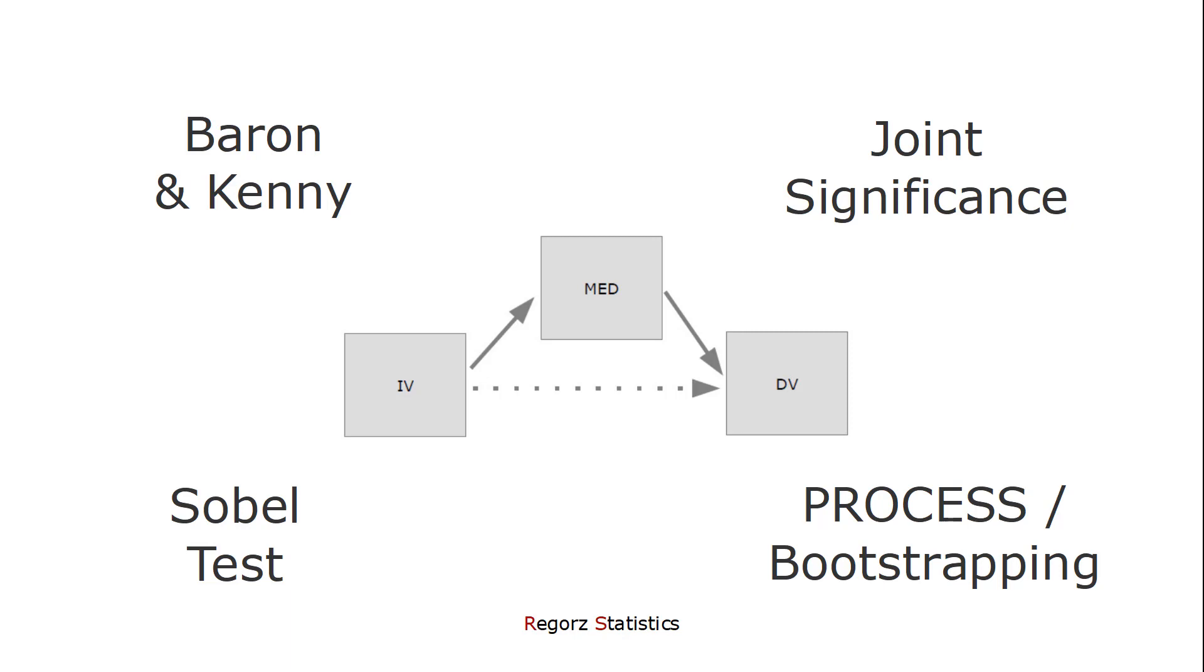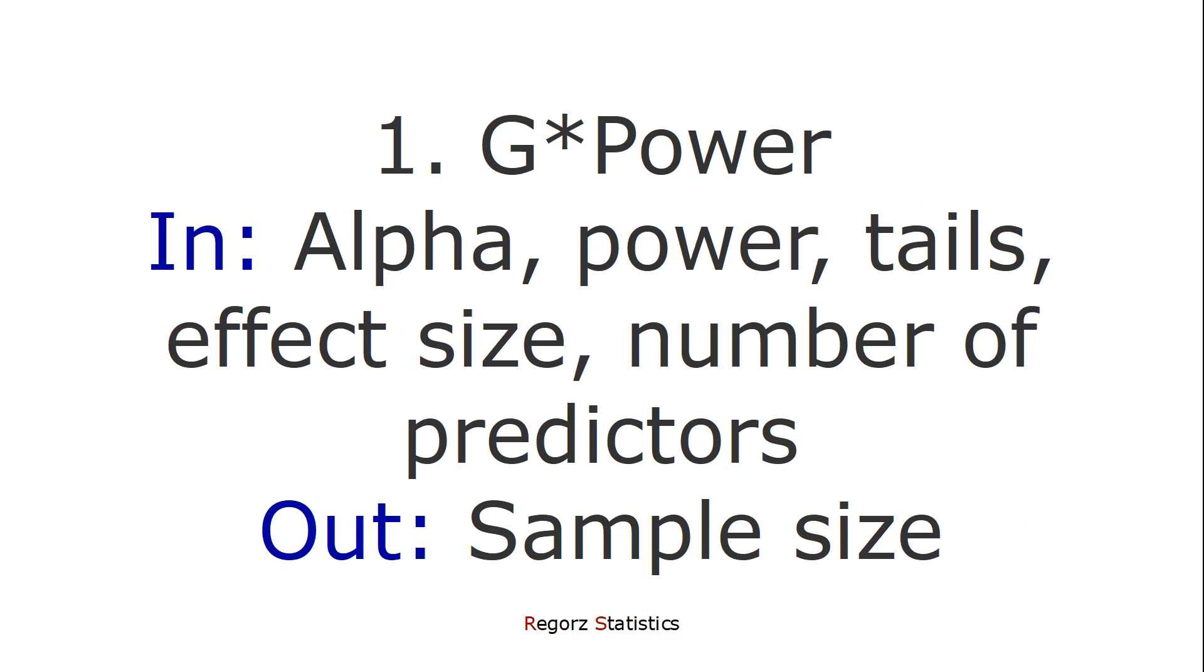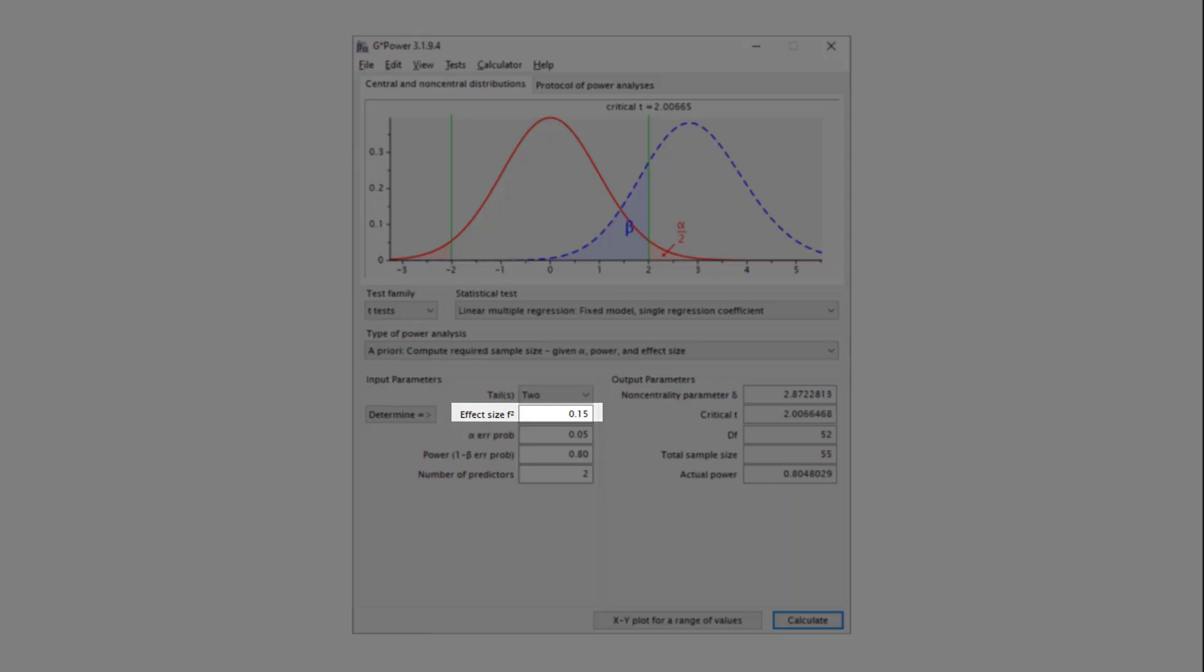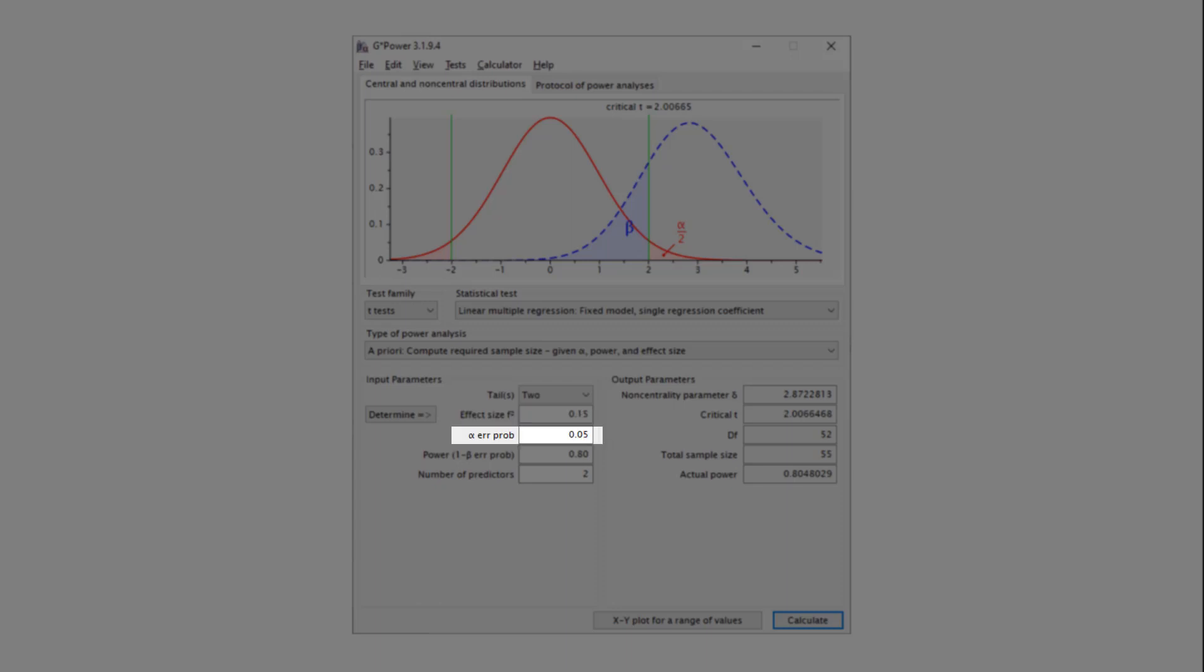In G*POWER, you put in your alpha level, the power you want, in most cases probably 0.80, whether you want to test one-tailed or two-tailed, the effect size you're expecting, and the number of predictors, and you get out your sample size. So here, one-tailed, two-tailed, the effect size, the alpha error, the power, the number of predictors, and here would be the sample size as a result.